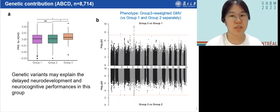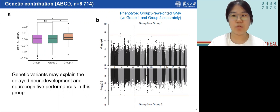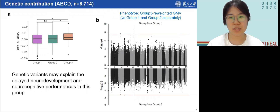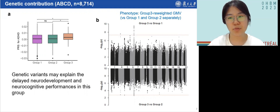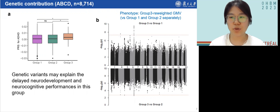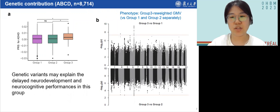We estimated a proxy phenotype. For example, to compare group 3 and group 1, we began by calculating the region-specific weight in discriminating these two groups in the imaging data, and applied these weights to corresponding regions in ABCD to obtain the reweighted gray matter volume. Because of the similar results when comparing group 3 with groups 1 and 2, we combined groups 1 and 2 into a single group, calling the resulting measure 'group 3 reweighted gray matter volume' — essentially a propensity for late brain maturation.